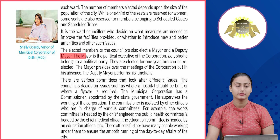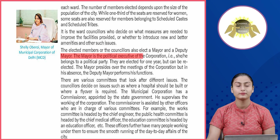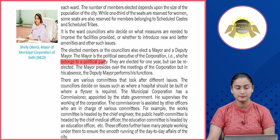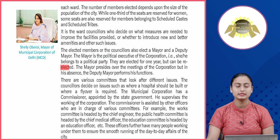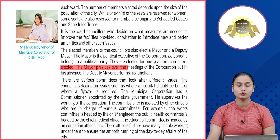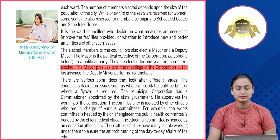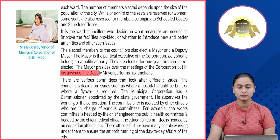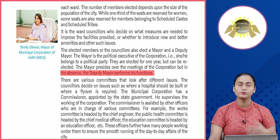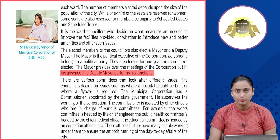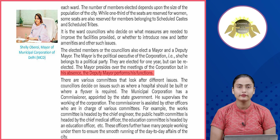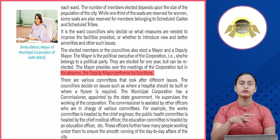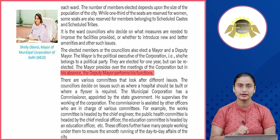The elected councillors also elect a mayor and a deputy mayor. The mayor is the political executive of the corporation — she or he belongs to a political party and is elected for one year but can be re-elected. The mayor presides over the meetings of the corporation, and in his absence the deputy mayor performs his functions.